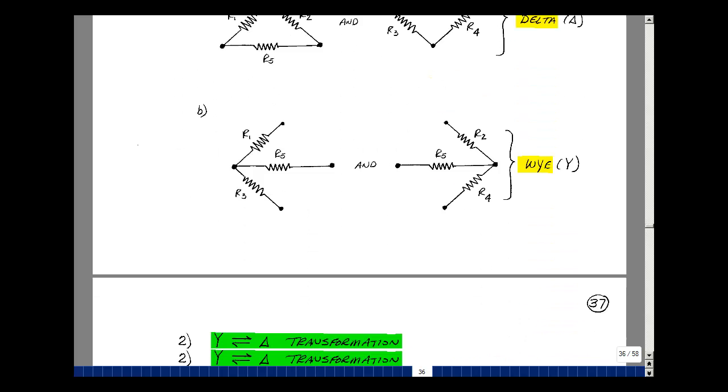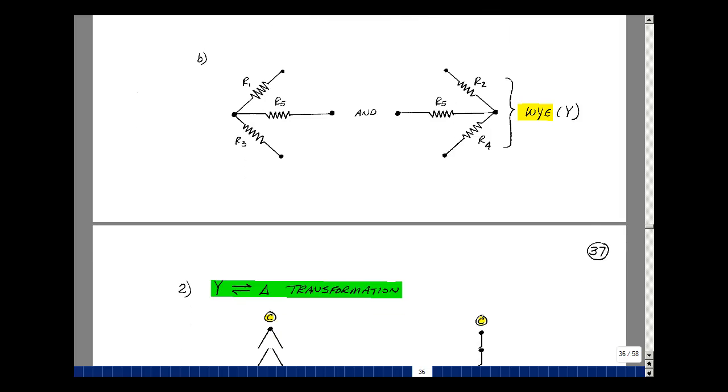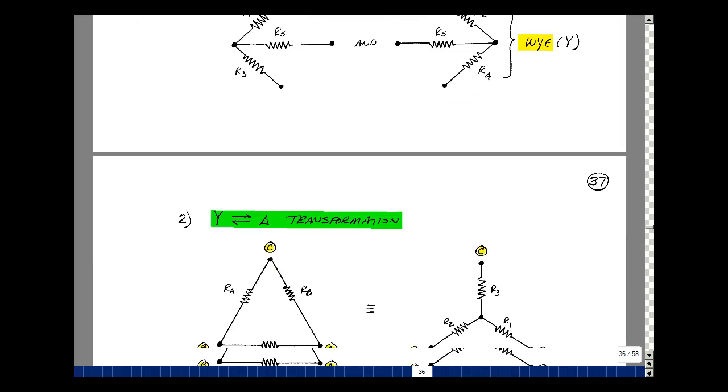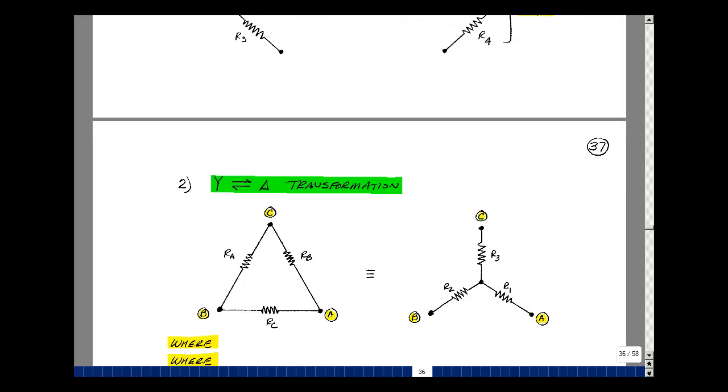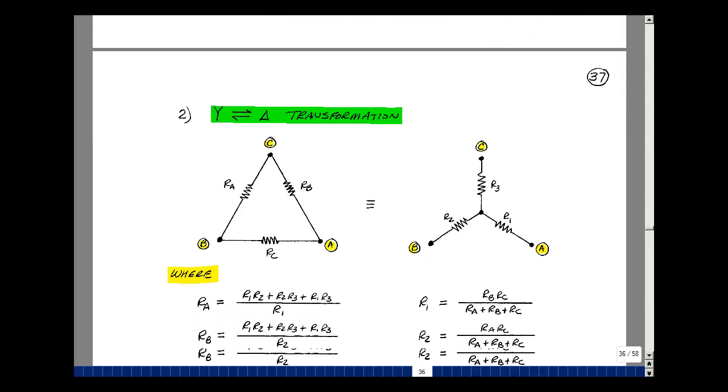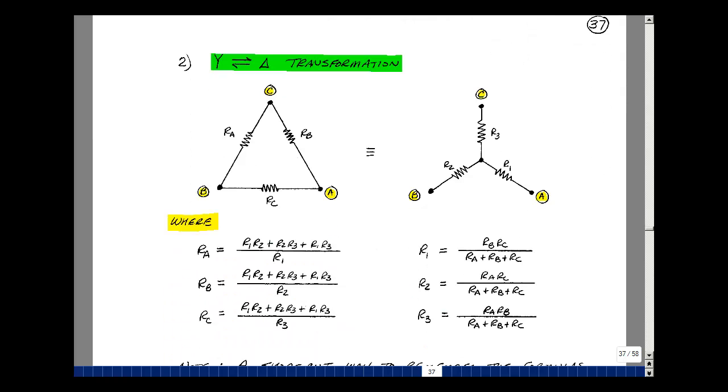Suppose that we have a circuit that has Ys and deltas in it. I can transform a delta to a Y and a Y to a delta. And that's really our next theorem. I'm going to give you the formulas for doing the transformation, and then we're going to talk about deriving them and then show how to use this.